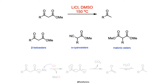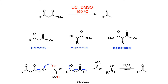Since the reaction follows an SN2 mechanism, it works best with methyl esters, which are dealkoxycarbonylated faster than ethyl and other longer-chain esters. In the suggested mechanism, the anion from the salt attacks the alkyl group of the ester in an SN2 fashion, and the decarboxylation results in the formation of an enolate intermediate that is quenched by water.